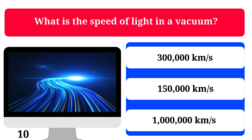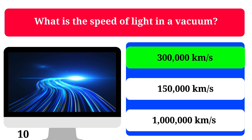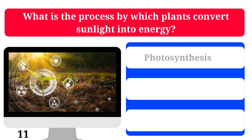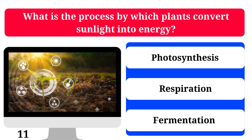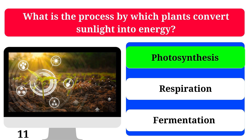What is the speed of light in a vacuum? 300,000 kilometers per second, 150,000 kilometers per second, or 1 million kilometers per second? What is the process by which plants convert sunlight into energy? Photosynthesis, respiration, or fermentation? The correct answer is photosynthesis.